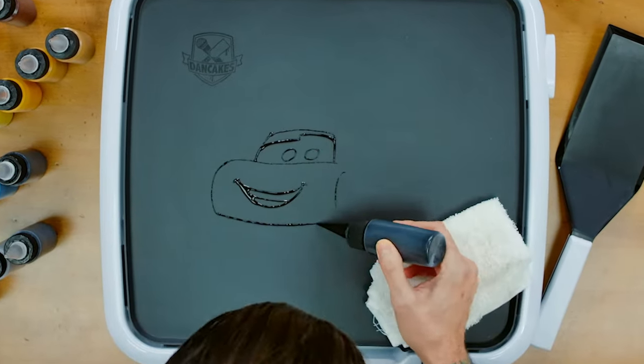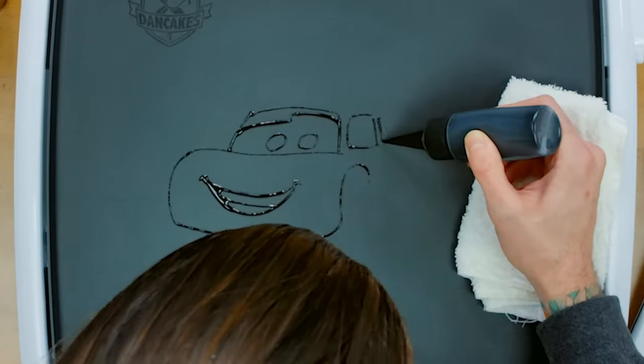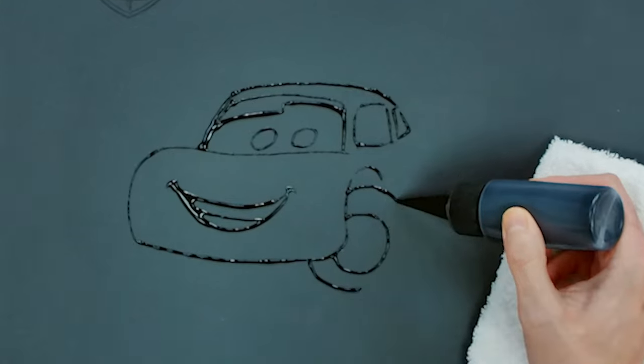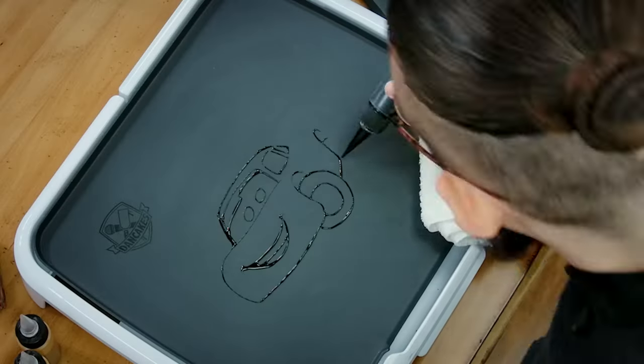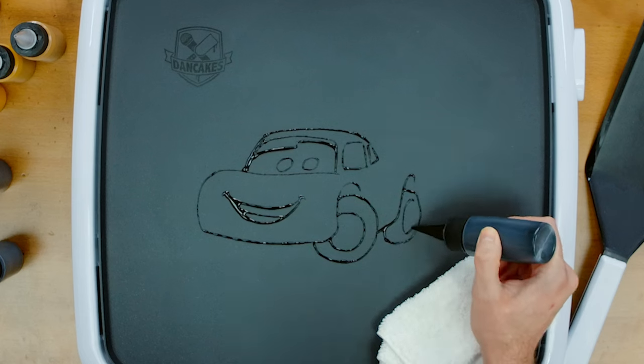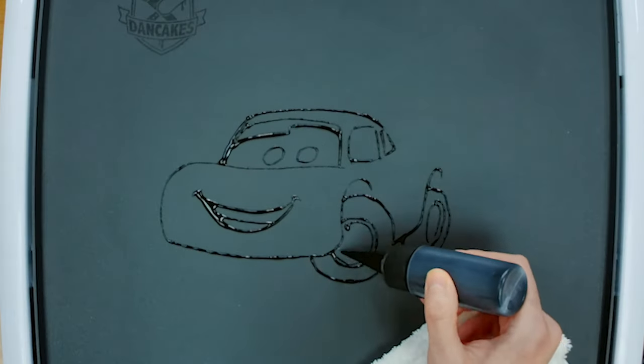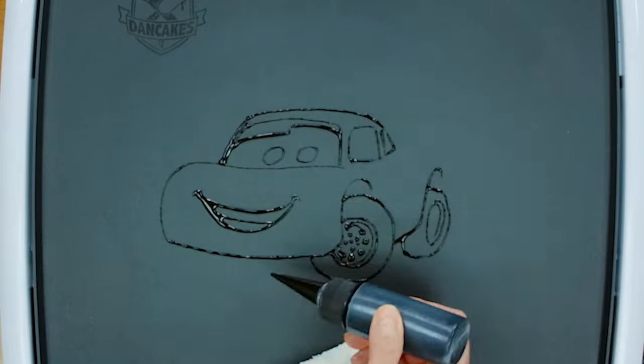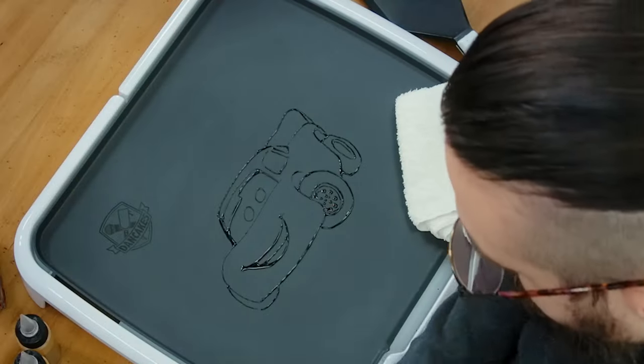Whenever I do a pancake art design the first thing I always focus on is the line art. So here it's kind of like we're making ourselves a coloring book, giving ourselves borders, giving ourselves zones that we can go back through and color in later.